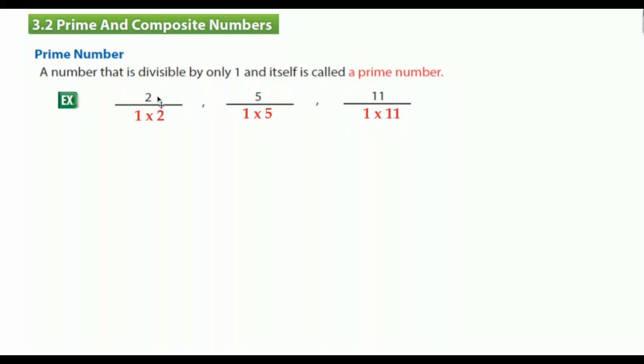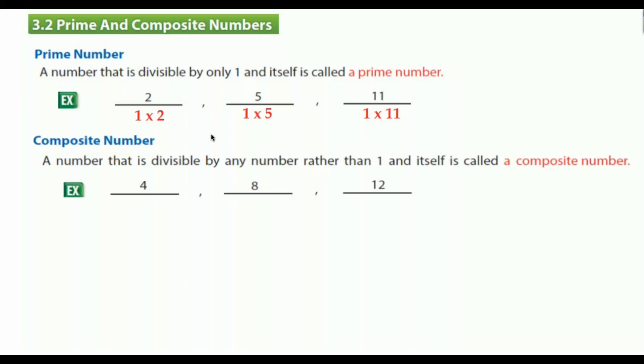Now let's see composite numbers. A number that is divisible by any number rather than 1 and itself is called a composite number. You can find more factors—more than 2 factors—we call that a composite number.